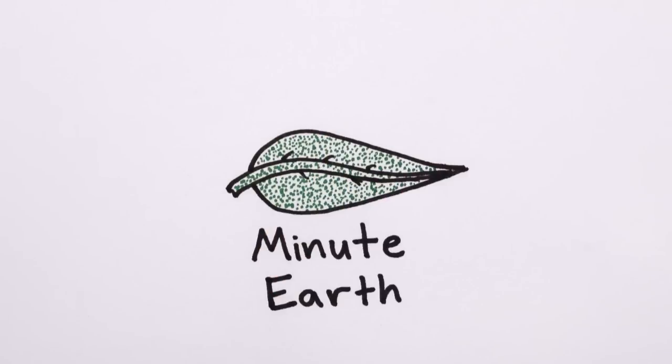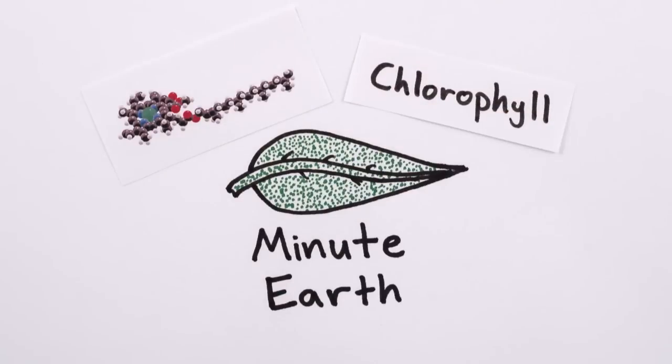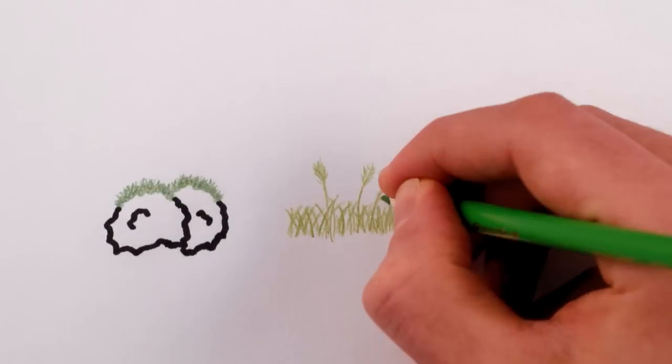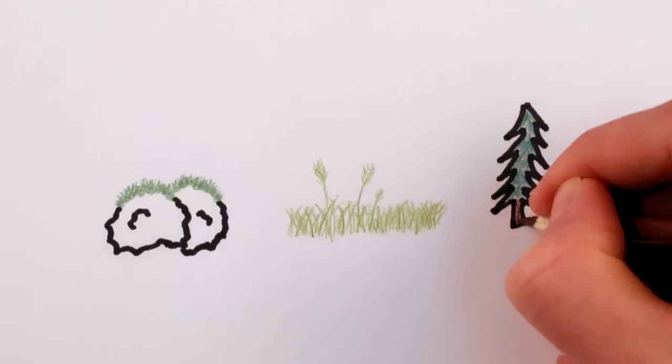You may have learned that leaves are green because they're full of a green molecule called chlorophyll. It's the reason for the greenness of plants, from moss-green moss to grass-green grass to evergreen evergreens.